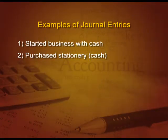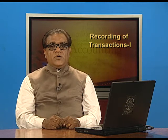Next example: Purchased stationery in cash. Cash is going out, so it is an asset going out, which means it is credited. Stationery is an expense, and expenses are debited. So the entry in the particulars column is: Stationery account debit, To cash.